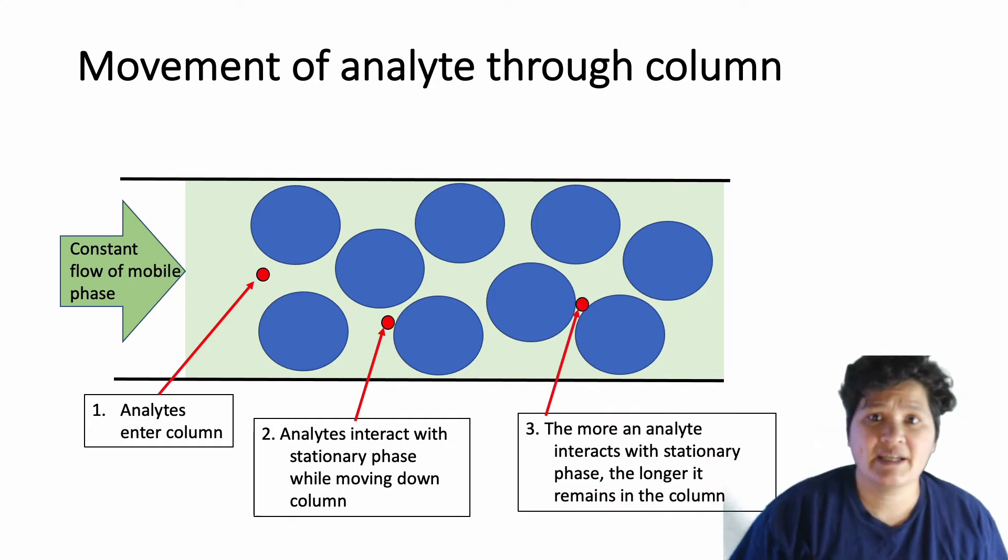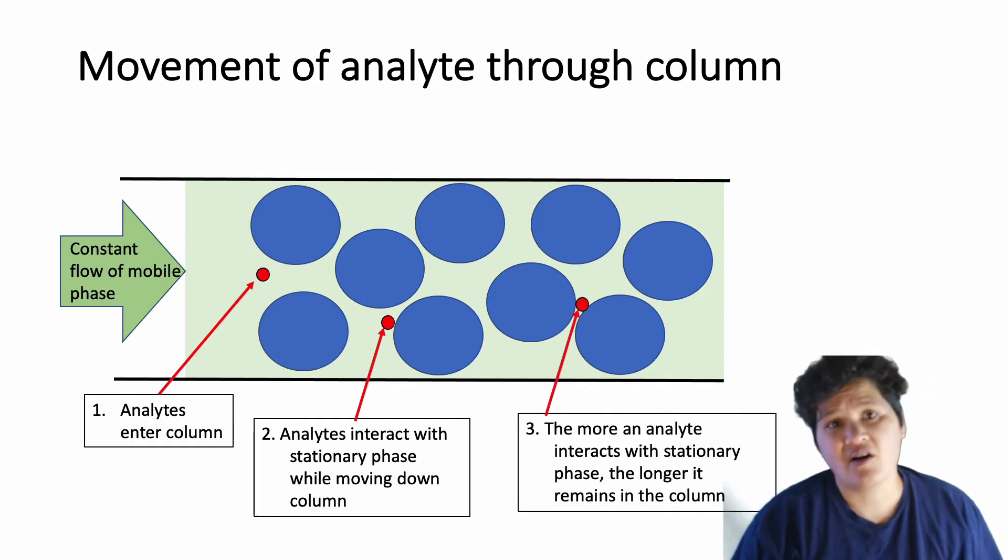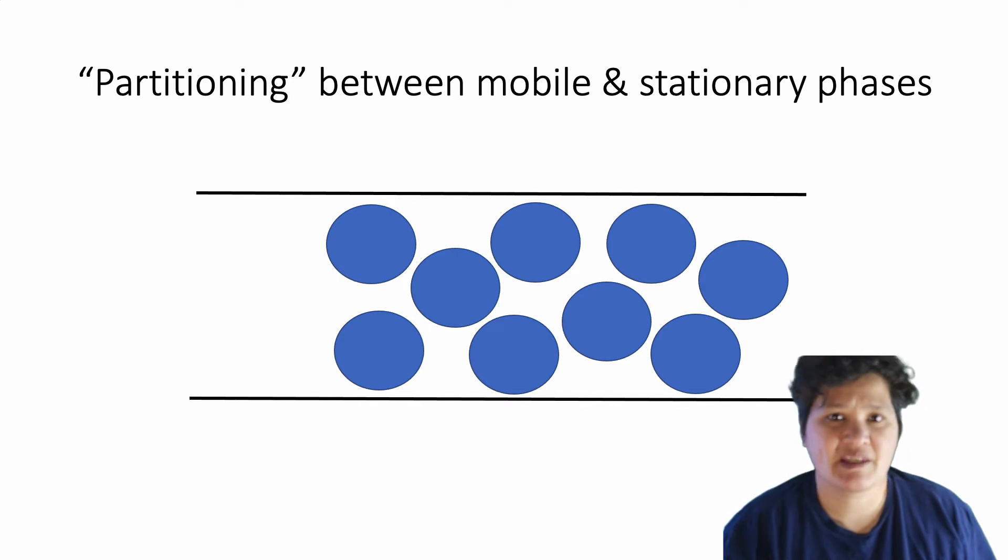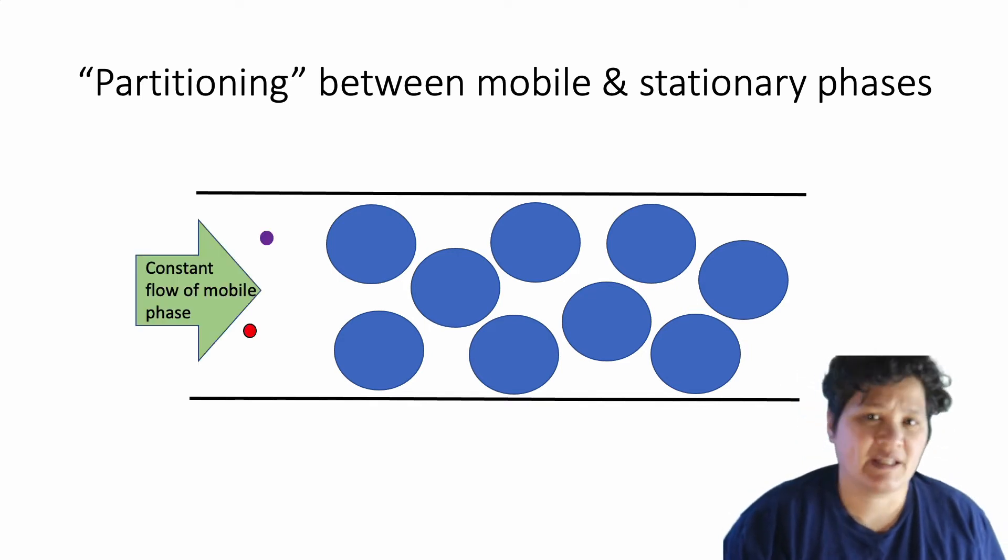The more an analyte interacts with a stationary phase, the longer it's going to stay in the column. Even if you have two molecules of the exact same analyte, they may not get through the column in the same amount of time. For example, here I've shown two different analyte molecules, which are different colors, so we can tell them apart. But let's pretend they're the same substance.